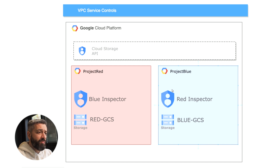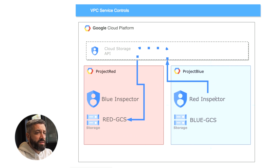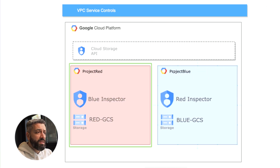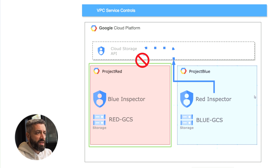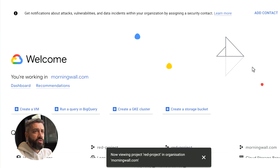We're going to see that these service accounts have permissions to list the buckets in the other project. From the Blue Project we can use the Red Inspector service account to list all the buckets in the Red Project. Then we're going to see how we can protect against this by keeping the same IAM permissions but creating a perimeter — a green rectangle around the project — and enforcing rules to stop the Red Inspector from accessing resources in the Red Project, specifically protecting the Storage API from requests coming from outside.